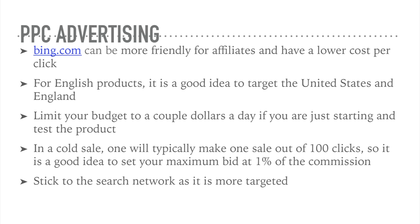As a sales statistic, typically in the cold market you can expect about a 1% conversion rate. So it's a good idea to make your maximum bid 1% of whatever commission you're going to make — that way you can at least break even if it sells at least 1% of the time, or make a profit if it sells more than that. This allows you to scale up afterwards once you figure out what is actually working.